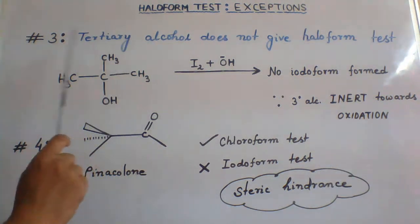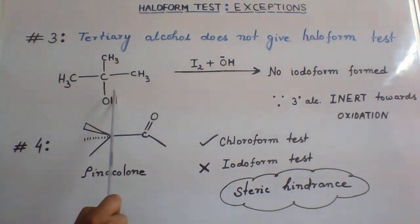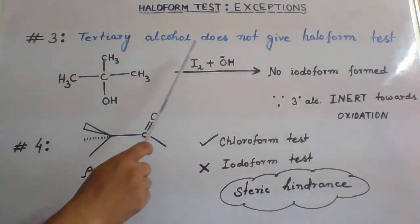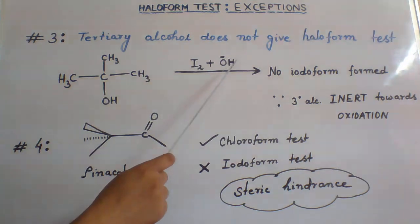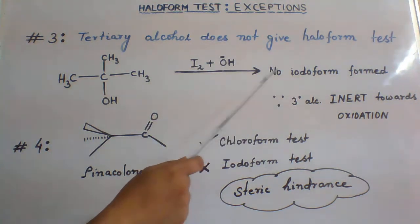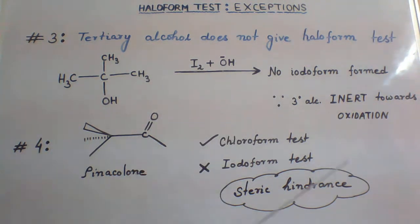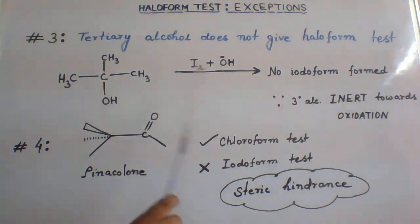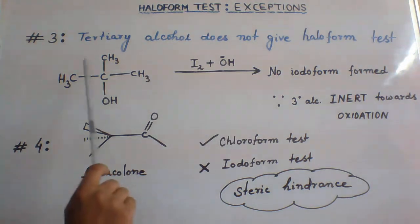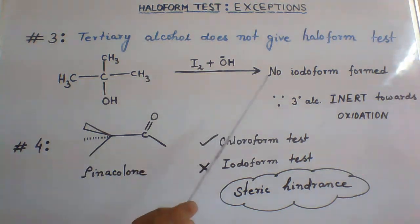Take this tertiary alcohol and react it with the reagent of haloform test, i.e., I₂ plus sodium hydroxide. You will see there is no formation of haloform, indicating a negative haloform test. The reason is very simple — it is a tertiary alcohol and it is difficult to oxidize.